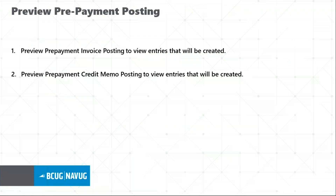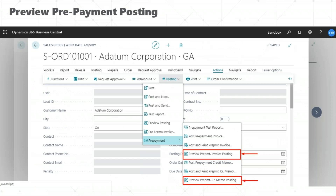This is a good feature: viewing all prepayment posting invoices and credit memos prior to posting, so you have an idea of what entries to expect, and if things go wrong you can figure out where. On the sales order page under the Posting tab, you will find a Prepayment action group where you can click 'Preview Prepayment Invoice Posting' and 'Preview Prepayment Credit Memo Posting,' and see all the entries that are present — just as you have a preview for any postings.